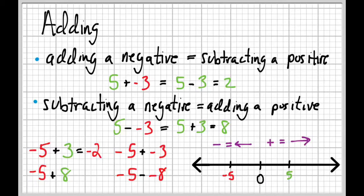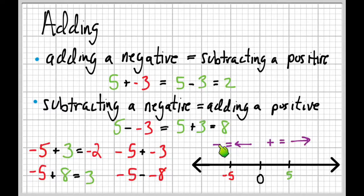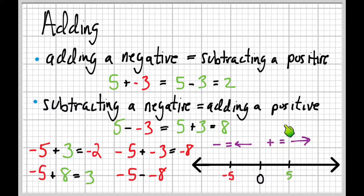For negative five plus eight: start at negative five, move right eight spaces — five brings us to zero and three more gives us positive three. For negative five plus negative three: adding a negative is subtracting, so we move left three — ending at negative eight. For negative five minus negative eight: subtracting a negative is the same as adding a positive, so this becomes negative five plus eight, which again gives us positive three.